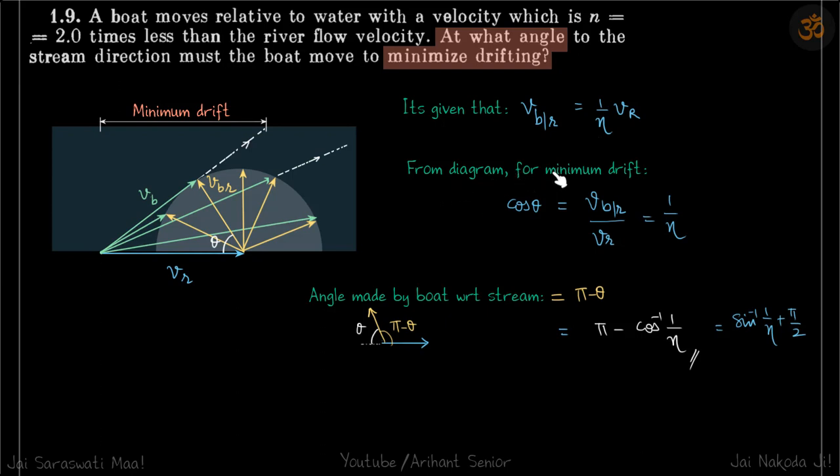From the diagram, for minimum drift, cos θ has to be vbr upon vr, and that ratio is 1 by η.